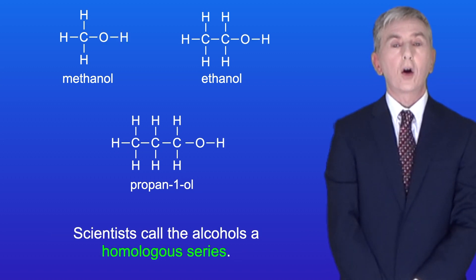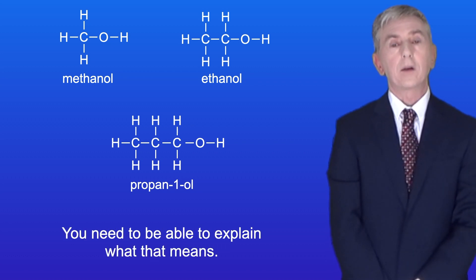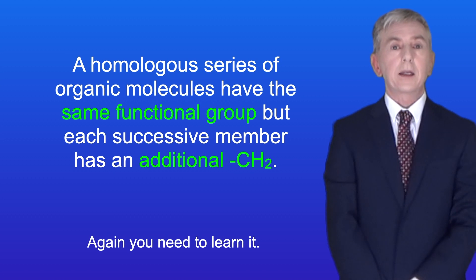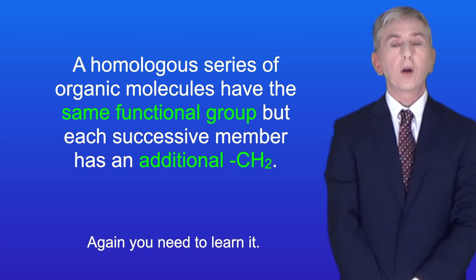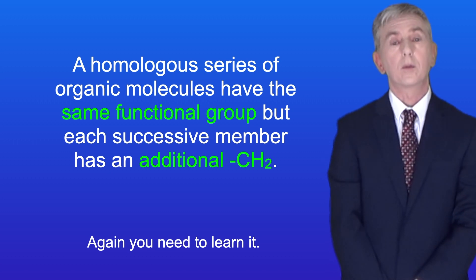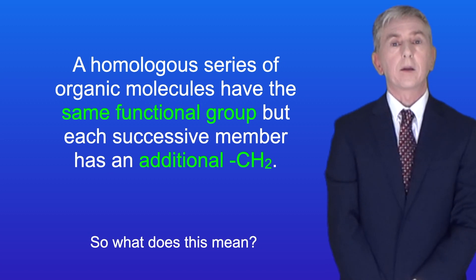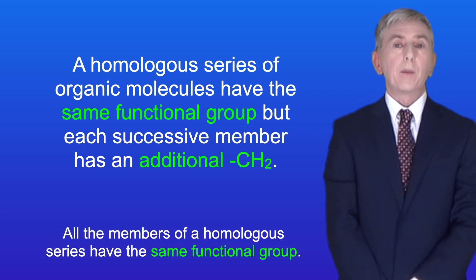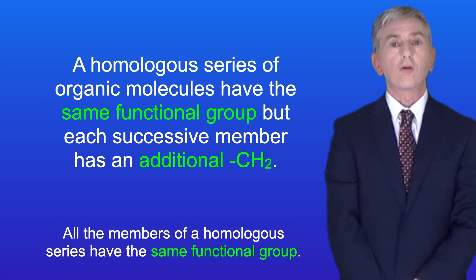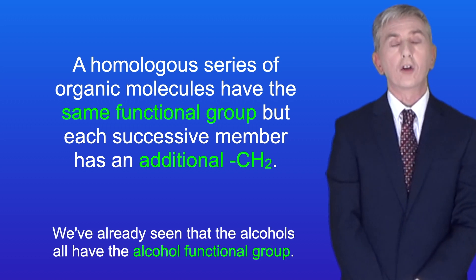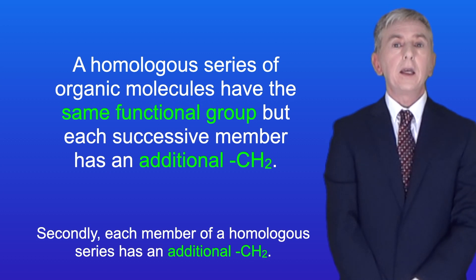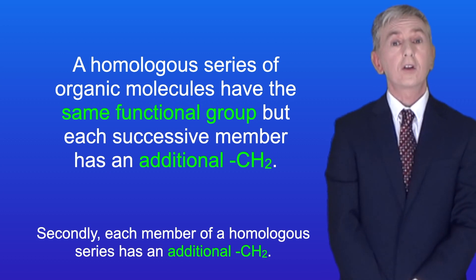Scientists call the alcohols a homologous series, and you need to be able to explain what that means. A homologous series of organic molecules have the same functional group, but each successive member has an additional CH2. Firstly, all the members of a homologous series have the same functional group, and we've already seen that the alcohols all have the alcohol functional group. Secondly, each member of a homologous series has an additional CH2.